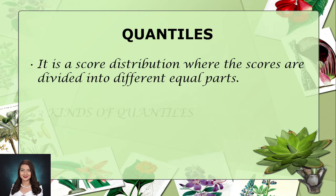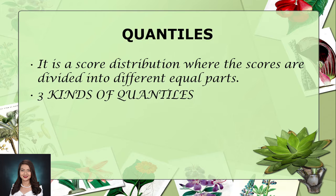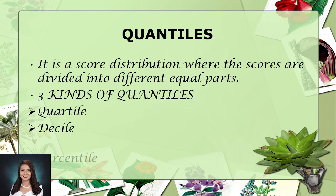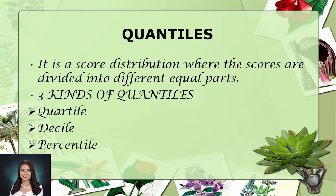There are three kinds of Quantiles. First is the quartile, next is the decile, and lastly is the percentile. Quantiles give some information about the shape of a distribution — in particular, whether a distribution is skewed or not.